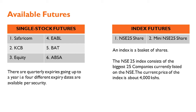The available futures include Safaricom, KCB, Equity, EABL, BAT, and ABSA. For the index futures we have the NSE 25 Share Index and the Mini NSE 25 Share Index. The difference between the index and the mini index is the multiplier — 100 versus 10. Buying a mini index is equivalent to buying 10 shares of each constituent company of the index, whereas for single stock futures it would be equivalent to buying a thousand shares.